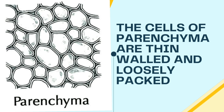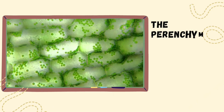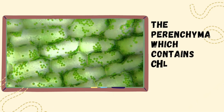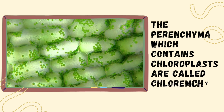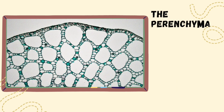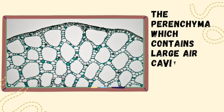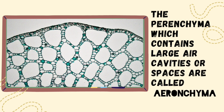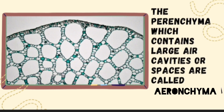The parenchyma which contains larger air cavities or spaces is called aerenchyma. Parenchyma cells have loosely arranged air cavities — empty spaces — and these are called aerenchyma tissues.